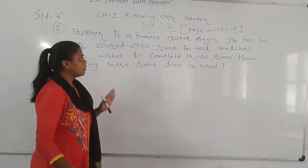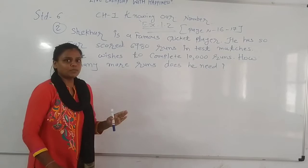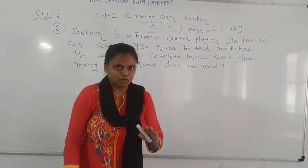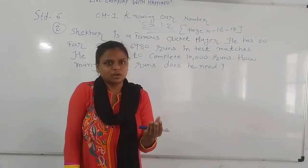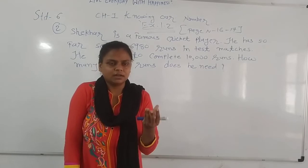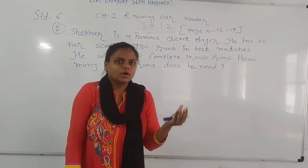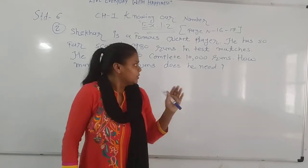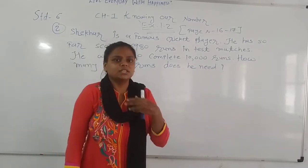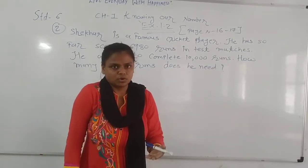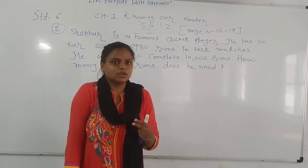The operation will be subtraction — we need to find the difference. For example, if we have 10 rupees and we want 100 rupees, how many more money will we need? Similarly here, we need to find how many more runs are needed to complete 10,000.